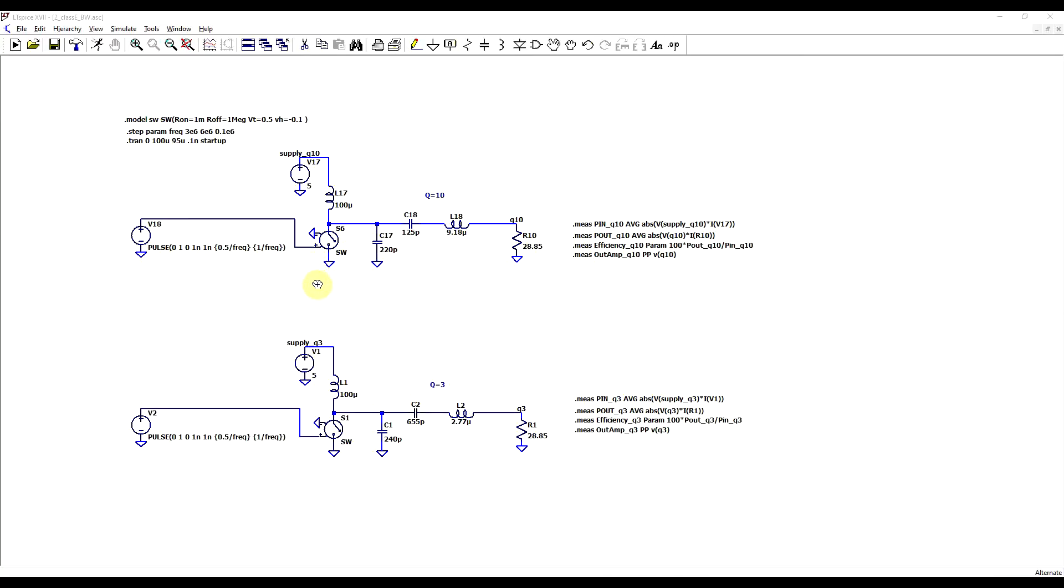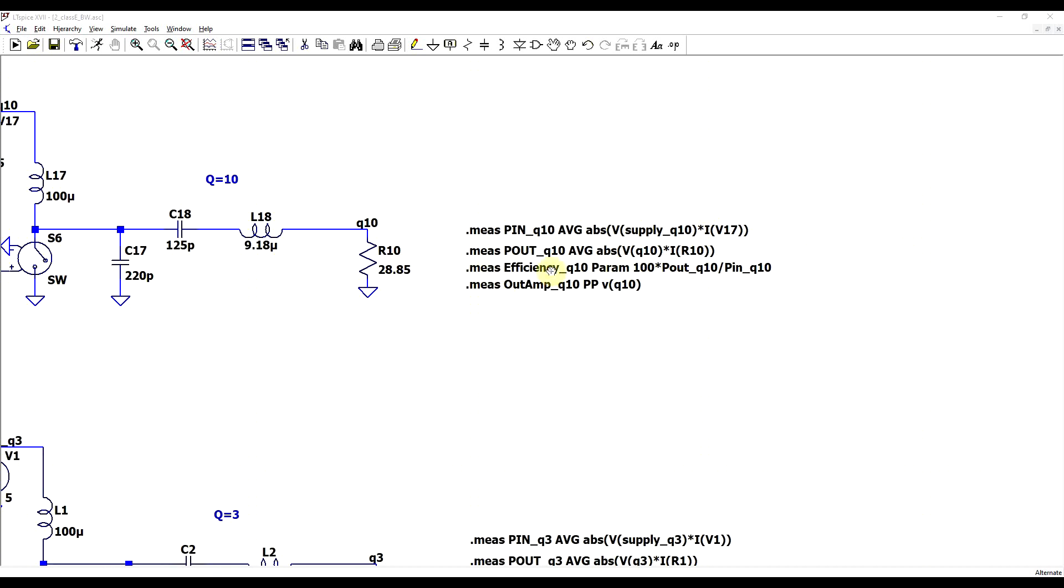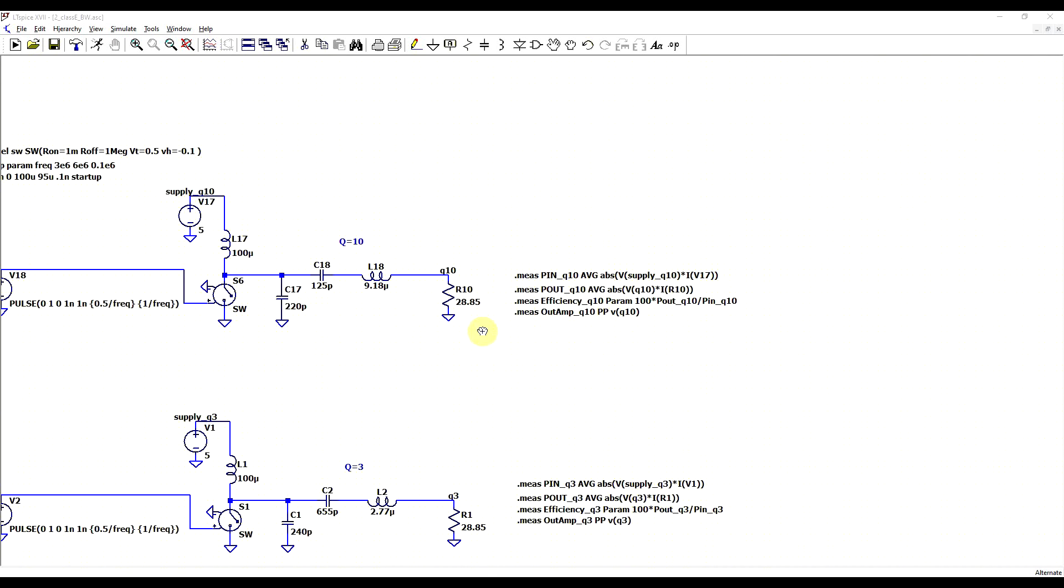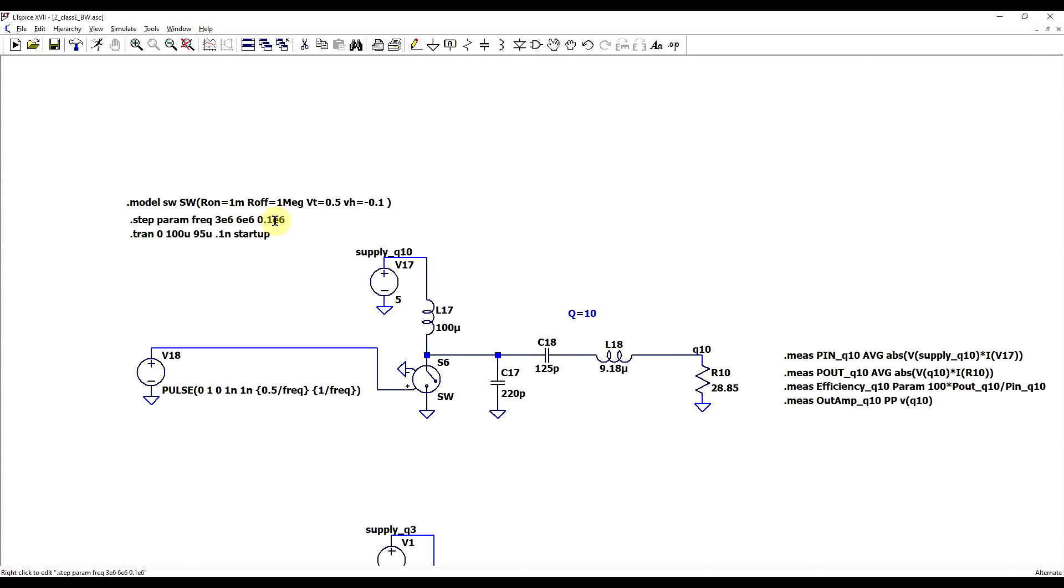For that we need to head back to the circuit simulator to see exactly why this is happening. I took the basic schematics from the two circuits that we simulated last time, so the class E amplifier with a Q factor of 10, and the one with a Q factor of 3, and I left these without any sort of output matching, just to get a clear picture of how the amplifier by itself is operating. To be able to actually evaluate the two circuits, I prepared a set of measurement statements. On the one hand, I'm measuring the output amplitude, so the peak-to-peak value, and on the other hand I'm measuring the amplifier's efficiency by calculating the ratio between output and input power. To get a better picture of the frequency behavior, I'm running this simulation from 3 MHz up to 6 MHz in steps of 100 kHz. So I'm varying the input signal.